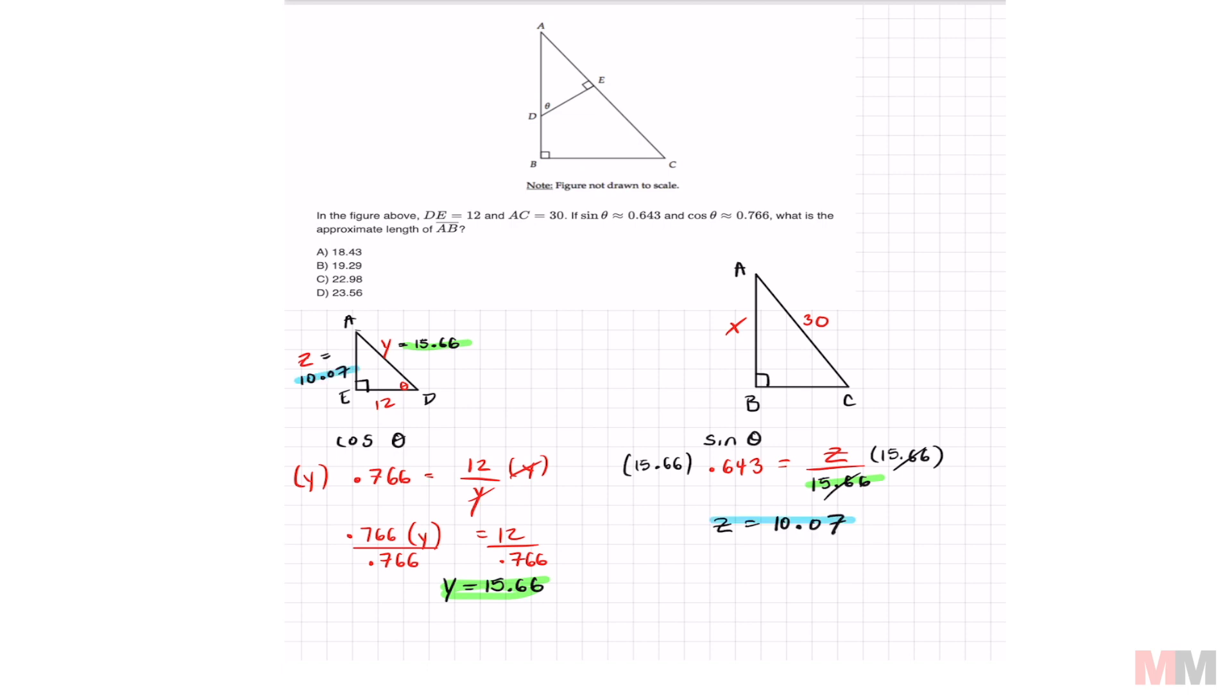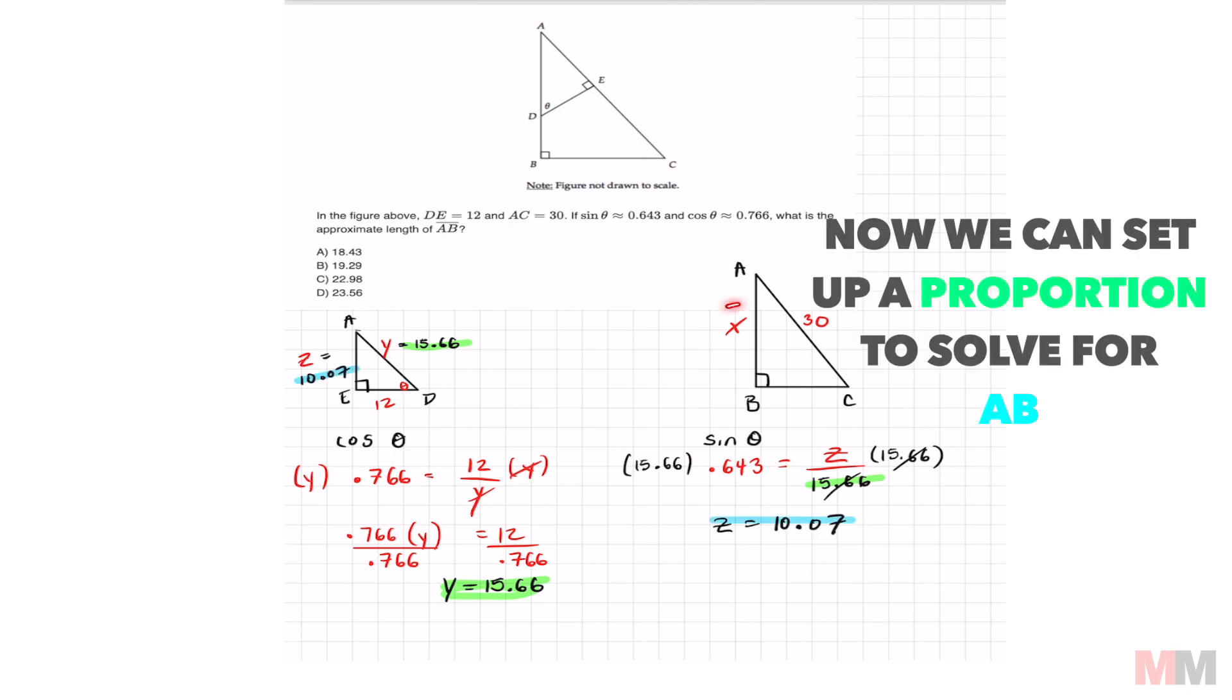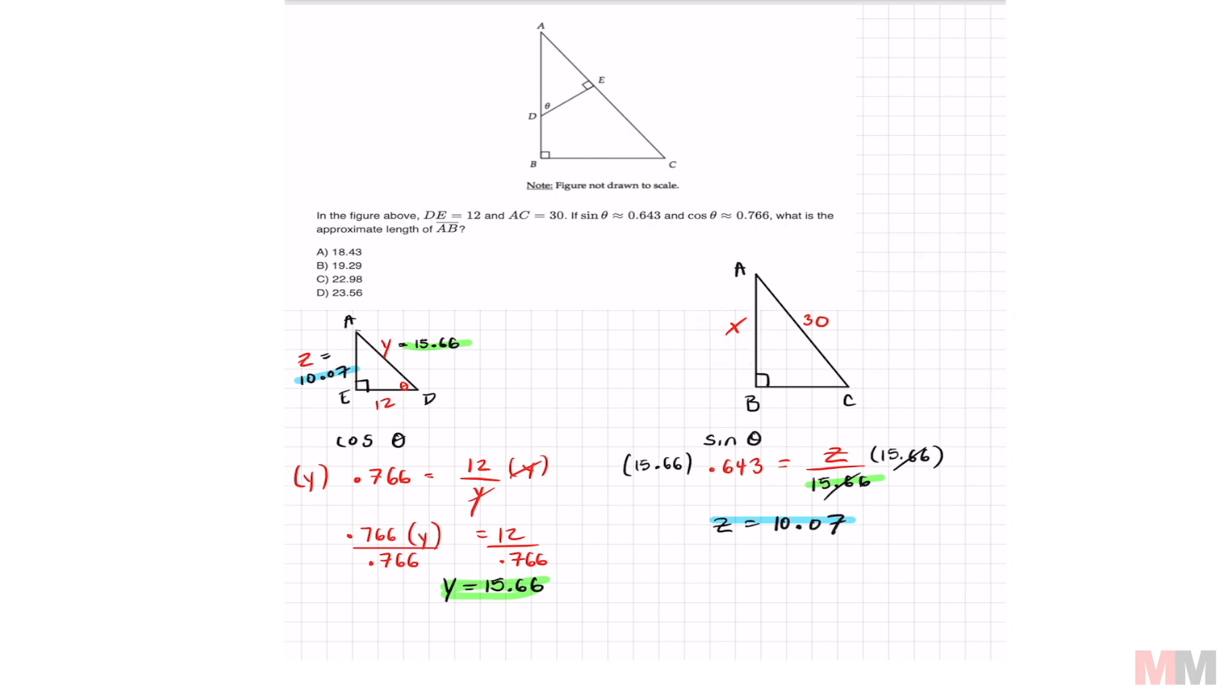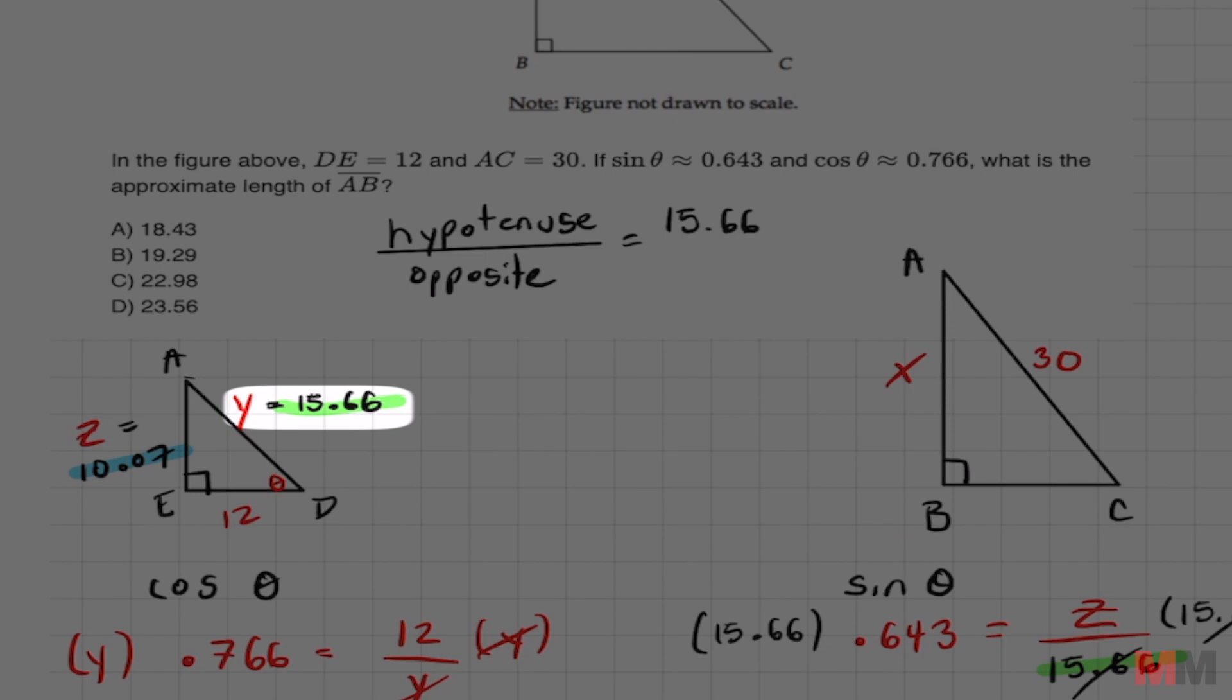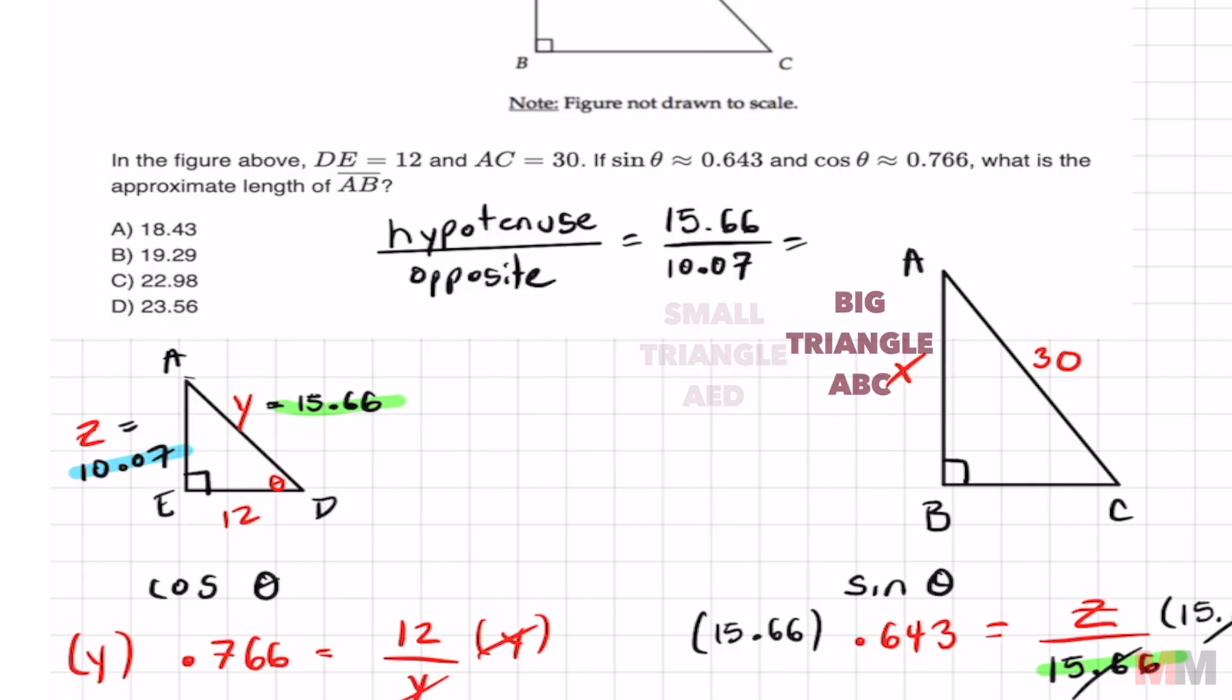So why did we find all that? Well now we can set up a main proportion to solve for X. And I'm just going to use the ratio hypotenuse over the opposite leg. 15.66 over 10.07 equals 30 over X and that's from the big triangle.